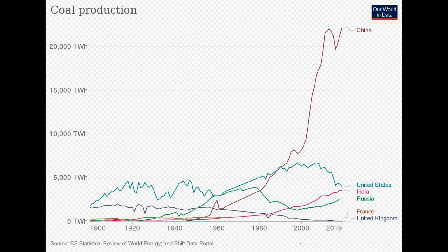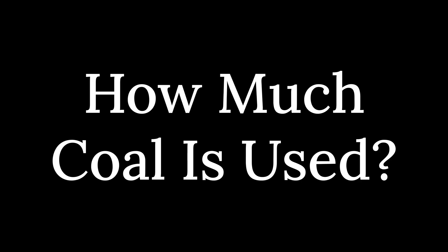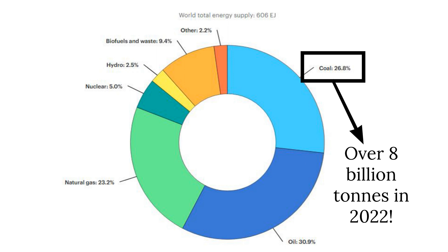What I'd like to do now is review how coal fits into the worldwide energy mix. From the International Energy Administration, the IEA, we have the world total energy supply for the year 2019, which is pretty similar to what we have today in 2023. If you look at the top right in the light blue portion of the donut chart here, coal provides 26.8% of all the energy that humans use worldwide. That is second only to oil, which comes in at 30.9%. The IEA estimates that in 2022, humans consumed over 8 billion tons of coal.